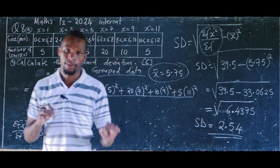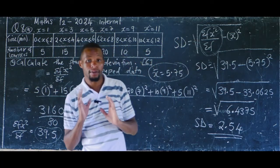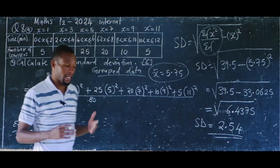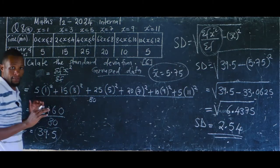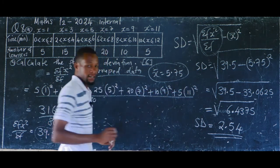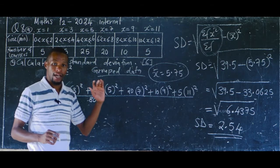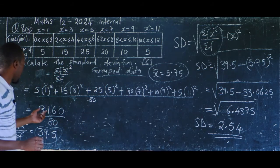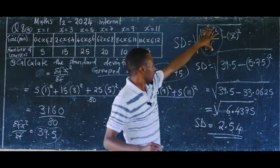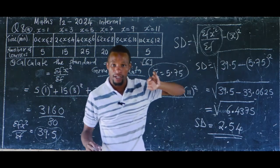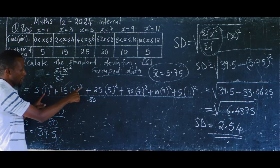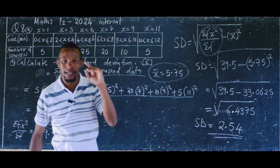Let me summarise the steps. When using this formula without drawing a table: first, calculate x-bar using summation fx over summation f — without squaring the x values. Once you have x-bar, the next step is to calculate summation fx² over summation f. Use the same setup as when calculating x-bar, but this time introduce the power of 2 on the x values inside the brackets.